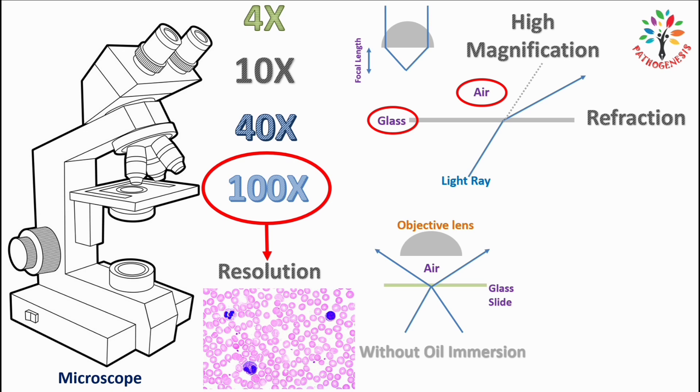To overcome this problem we need to replace the air between the glass slide and the objective lens with a medium which has similar refractive index with glass. Cedar wood oil has a refractive index similar to glass.